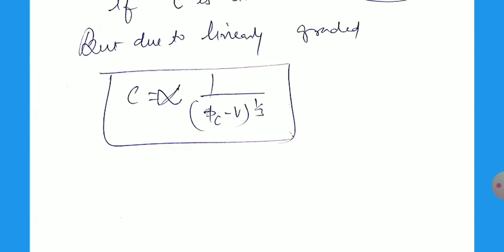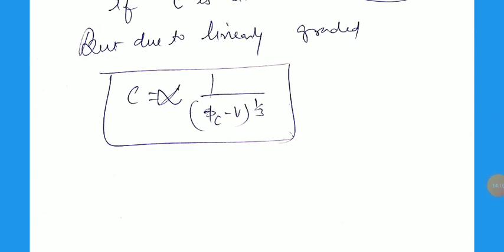If you apply any time-varying potential on this type of capacitor plates, this will be responsible for producing signals — that is why it is called a parametric amplifier. This is the first case of the P-N junction diode where the density changes linearly with respect to the distance. This is sufficient for today. Thank you very much.